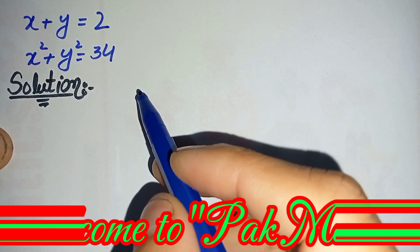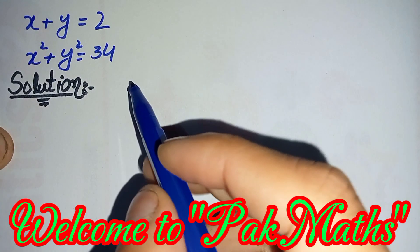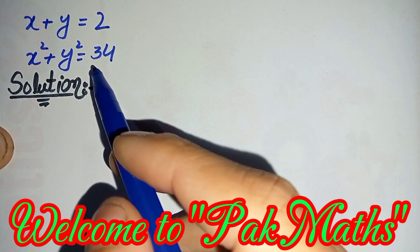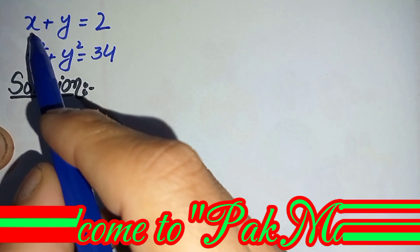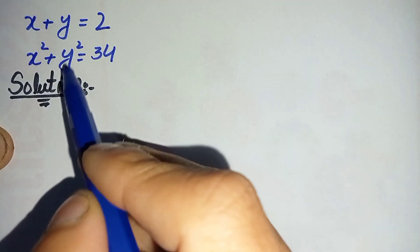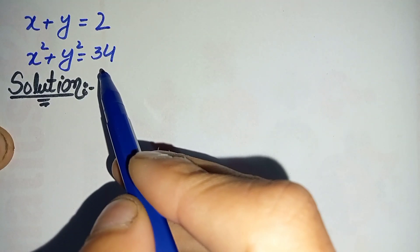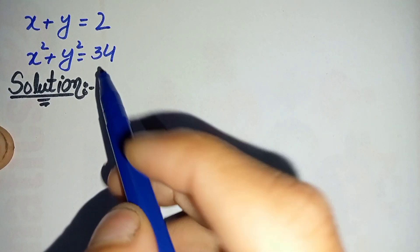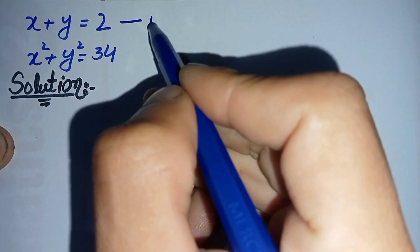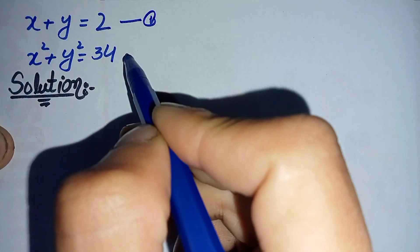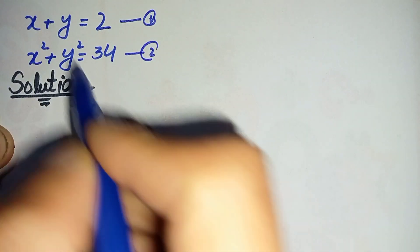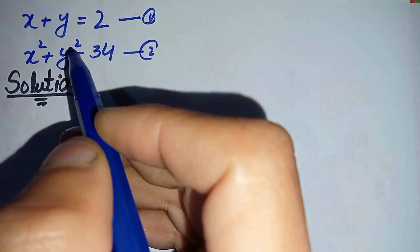Hello, you are welcome. How to solve this nice algebraic math problem: x plus y is equal to 2, and x squared plus y squared is equal to 34. First of all, let us suppose this is equation number one and this is equation number two.